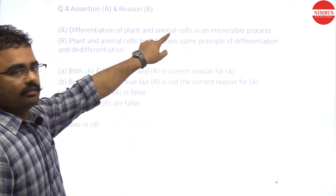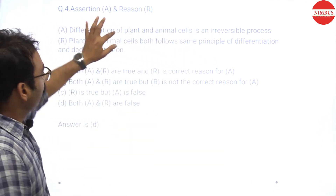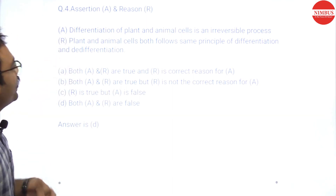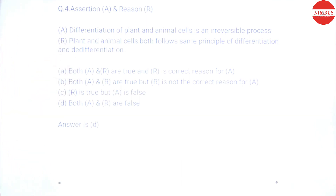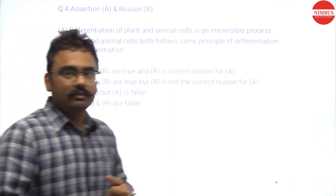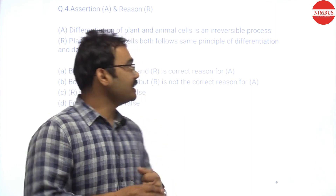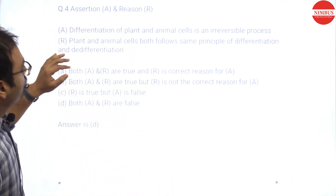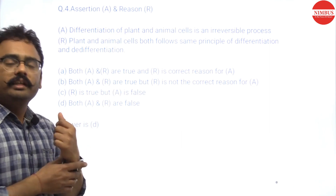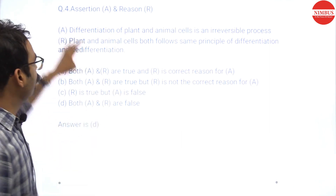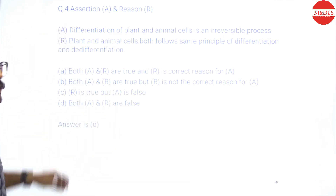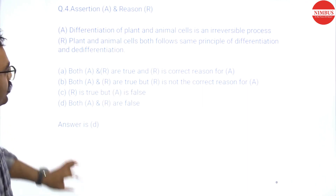This kind of reversion only happens in plants. In animals, once a cell is differentiated to a specialized cell, it cannot revert back. This is a very major difference between plant and animal cells. So the statement 'differentiation of plant and animal cells is an irreversible process' is wrong — irreversible applies to animal cells only. Both assertion and reason are false. D is the answer.